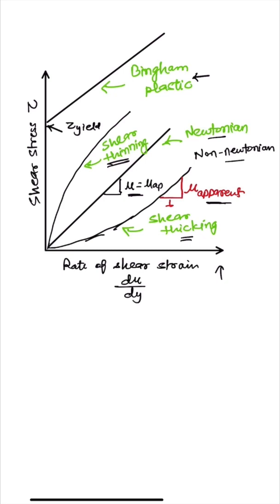So, mayonnaise is one of the examples of these kind of fluids. If we talk about shear thinning fluids, the paint is one example of shear thinning fluid.